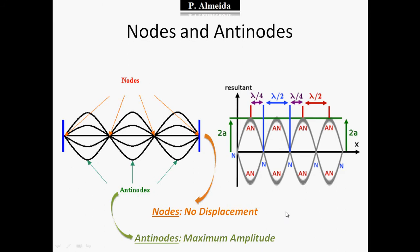If I have two waves of amplitude A and they meet, sometimes canceling and sometimes reinforcing, the points where they cancel have amplitude zero. The points where they reinforce will have amplitude 2A — two times the original amplitudes — and that is where I have the antinode.